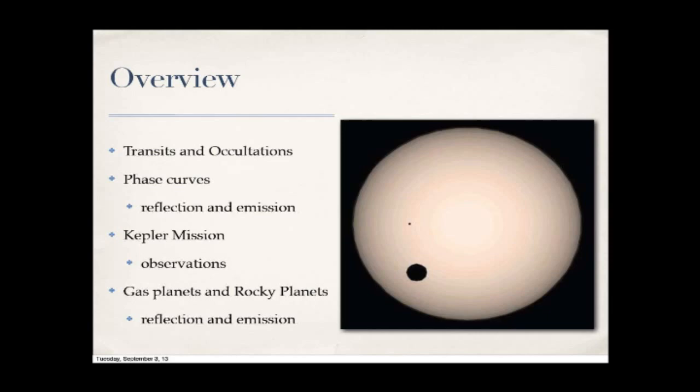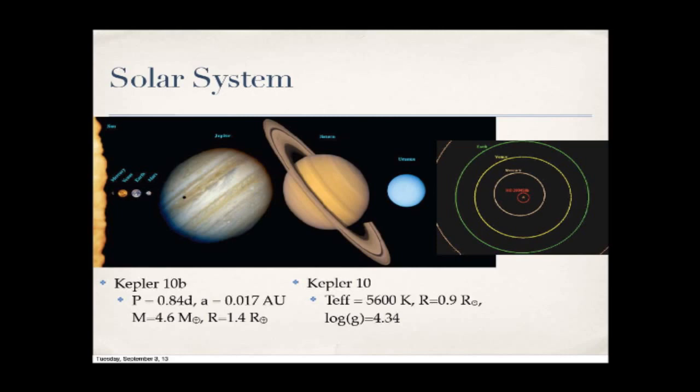Let's start by putting everything into context — the sizes of the objects we're talking about and how far away they are from their host star. Kepler-10b has a very short orbital period: P equals 0.84 days, meaning it takes only 20 hours to go around its host star.